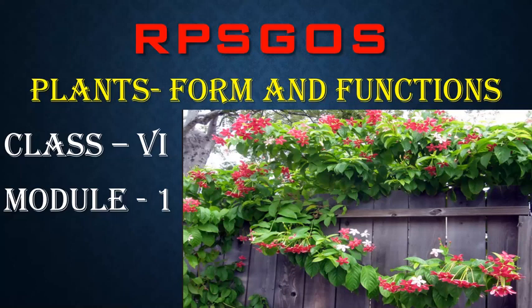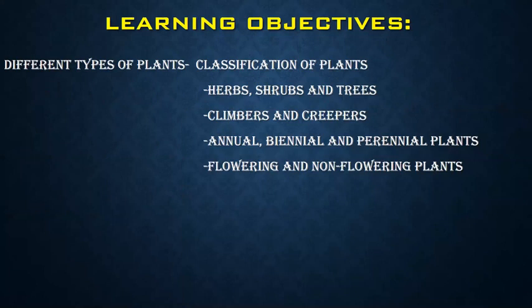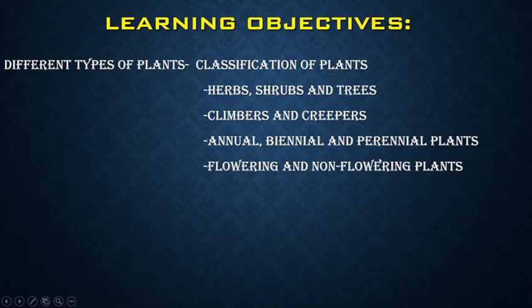In this module we will study about different types of plants, classification of plants based on their size, structure, lifespan, etc. Here we will study about herbs, shrubs and trees. We will know about climbers and creepers. We will study annual, biannual and perennial plants and we will study about flowering and non-flowering plants.